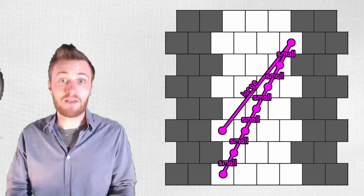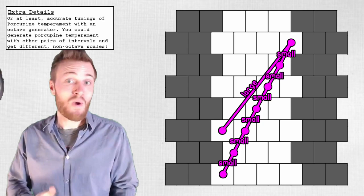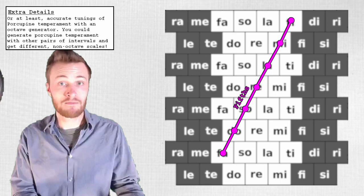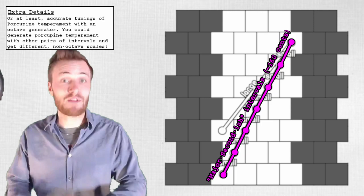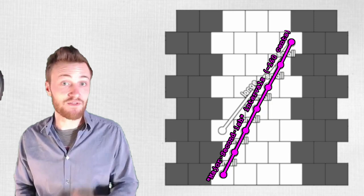This one large, six small scale can be derived from accurate tunings of what's called porcupine temperament. While in Western music we have a circle of fifths which can be flatted to give us better thirds, in porcupine you have a circle of major second-ish intervals that can be flatted to give us better pretty much everything.